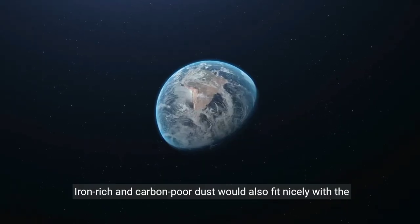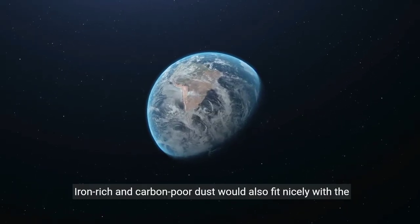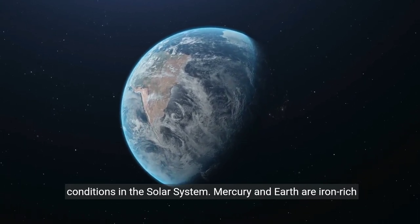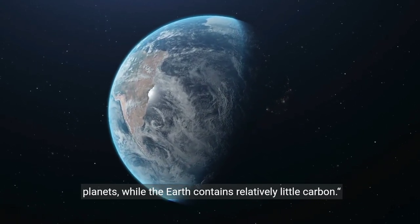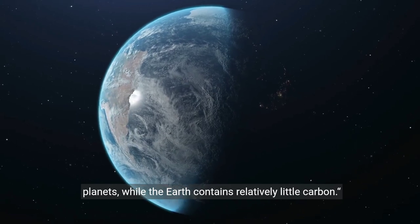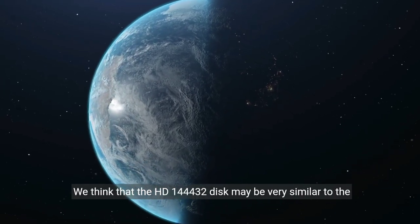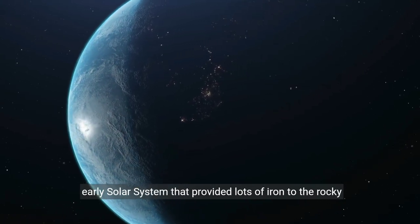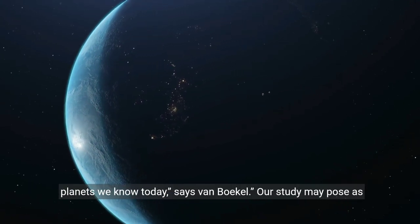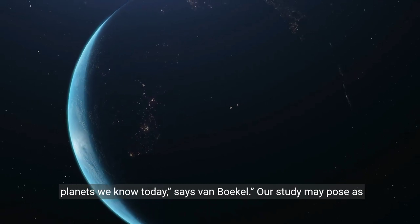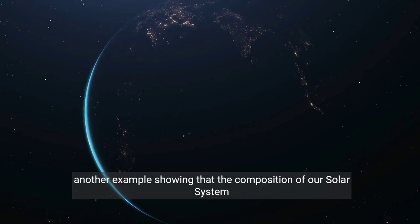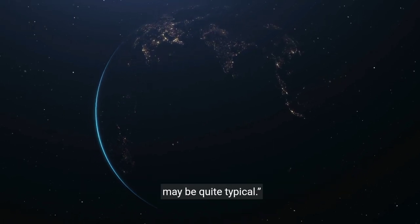Iron-rich and carbon-poor dust would also fit nicely with the conditions in the solar system. Mercury and Earth are iron-rich planets, while the Earth contains relatively little carbon. We think that the HD 144432 disk may be very similar to the early solar system that provided lots of iron to the rocky planets we know today, says Van Boekel. Our study may pose as another example showing that the composition of our solar system may be quite typical.